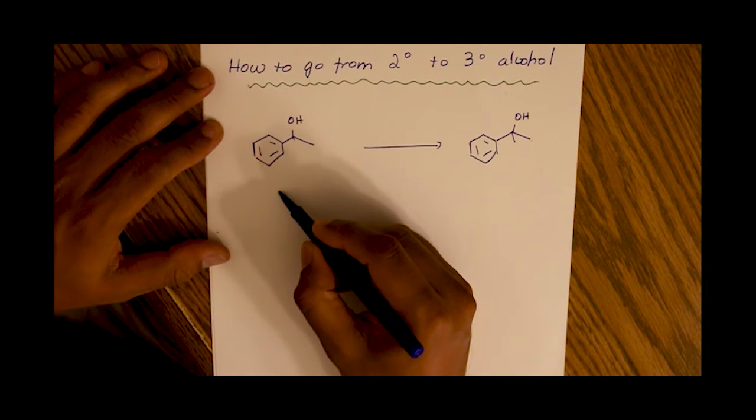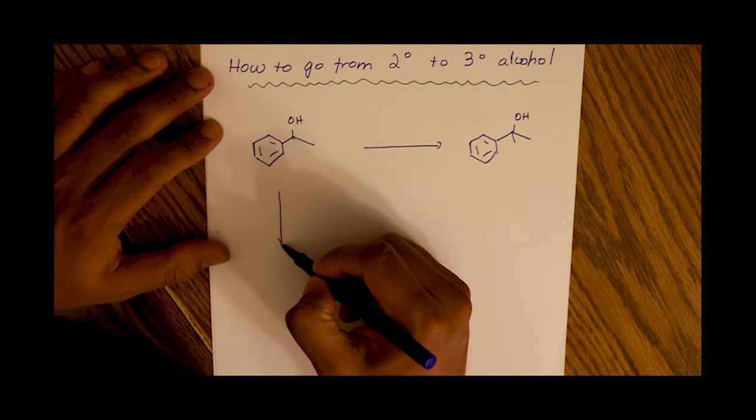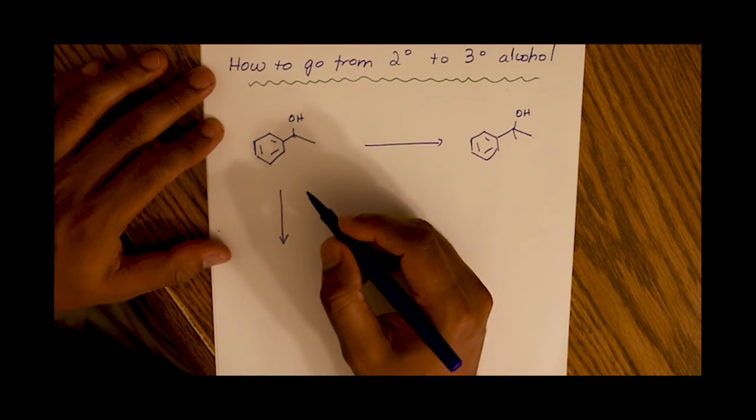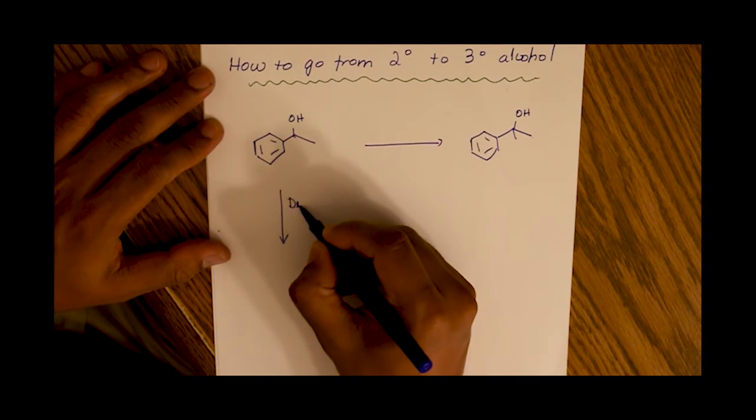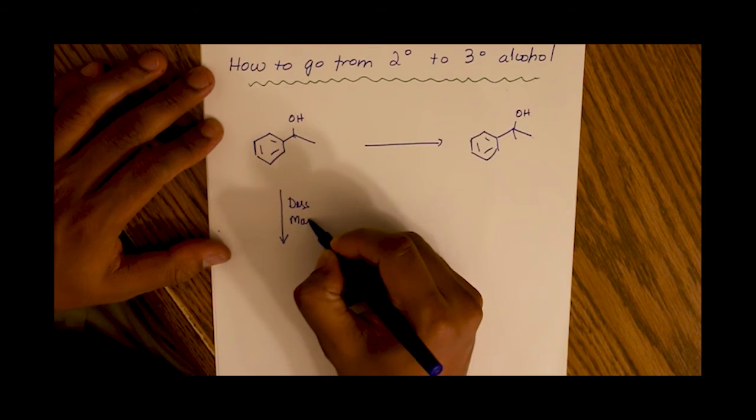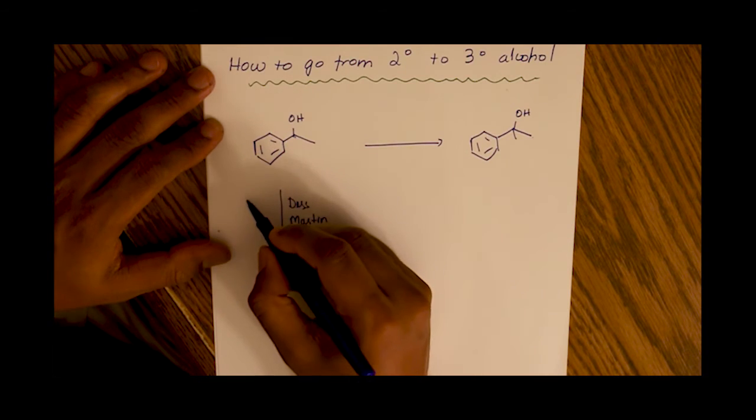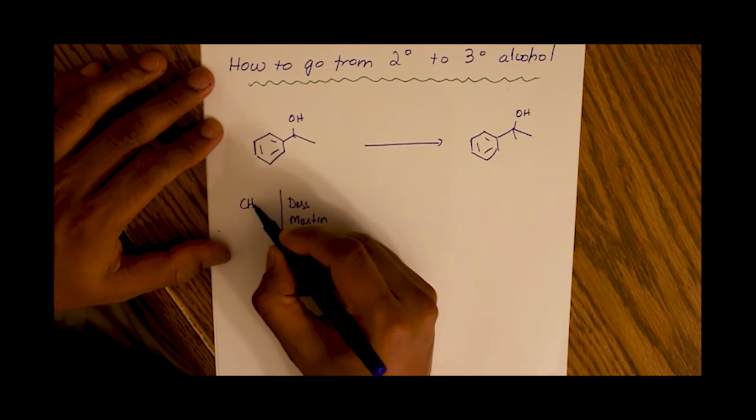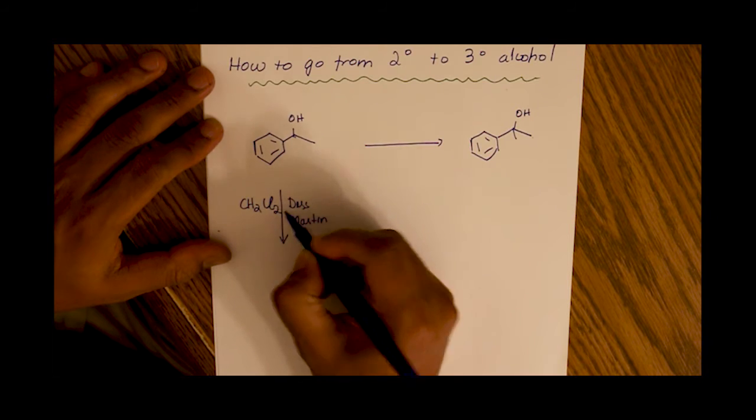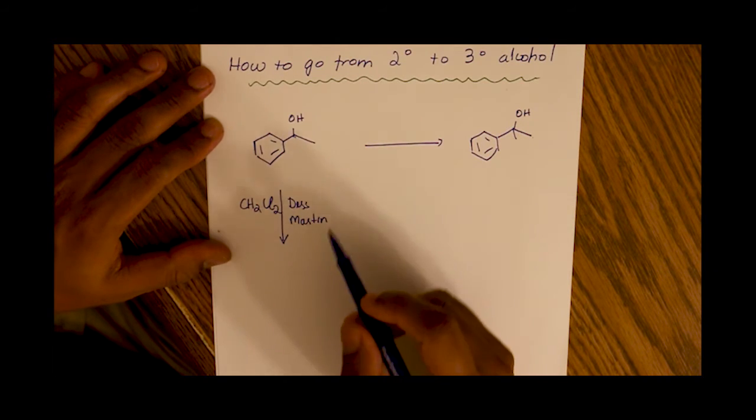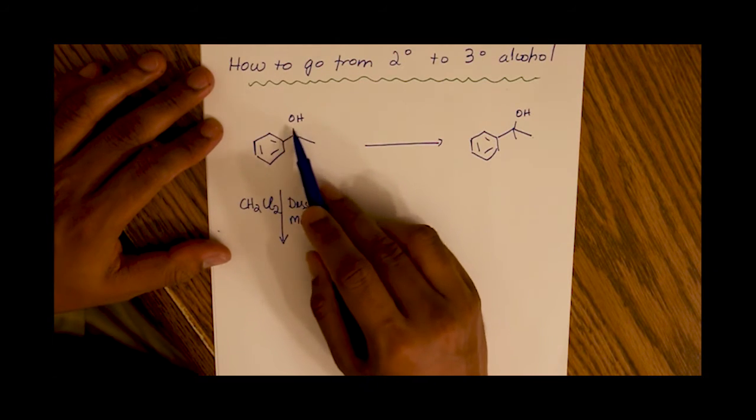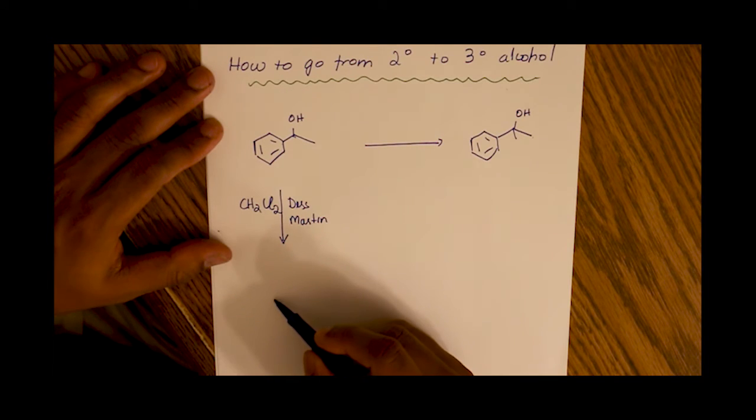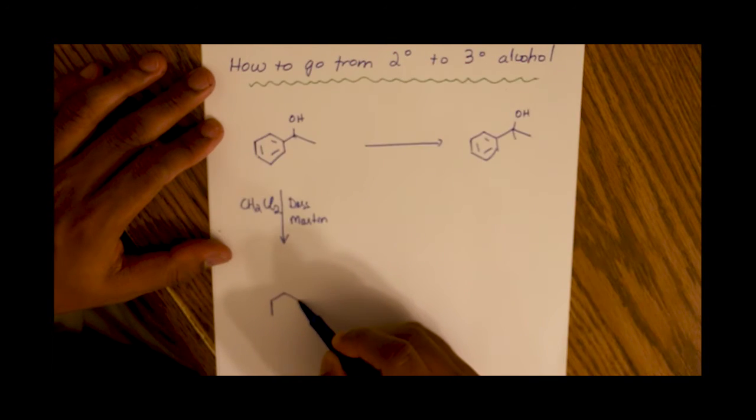The first step is to use an oxidizing agent like Des Martin in the presence of dichloromethane. And we oxidize the secondary alcohol to give us a ketone.